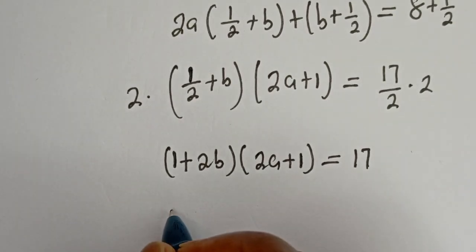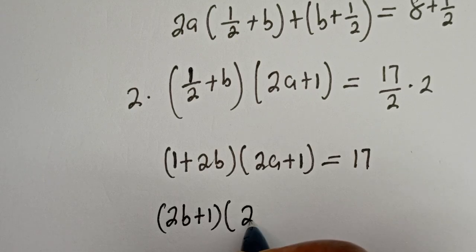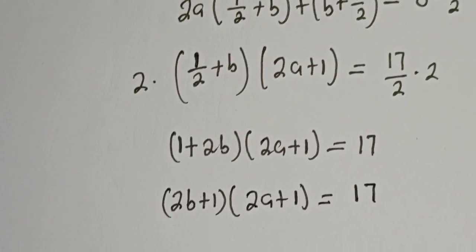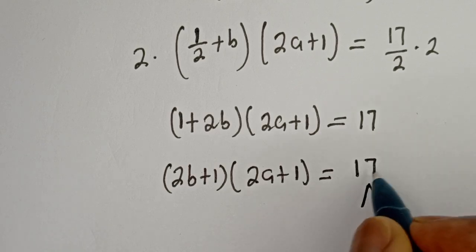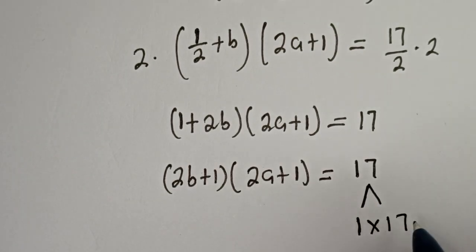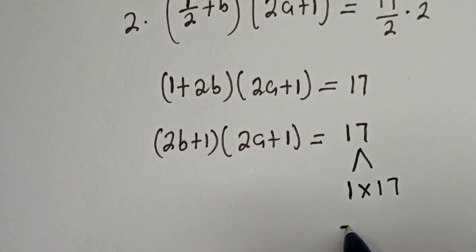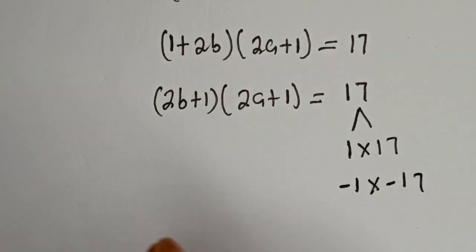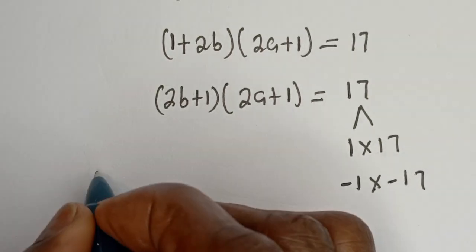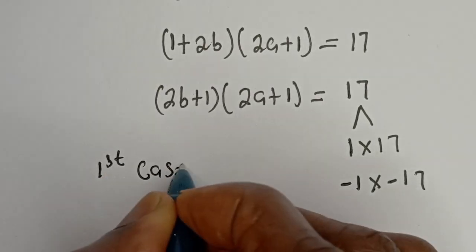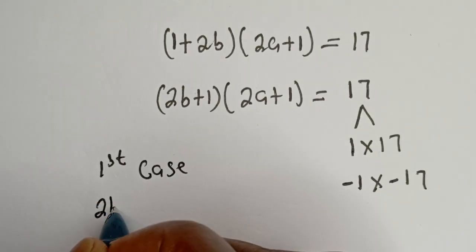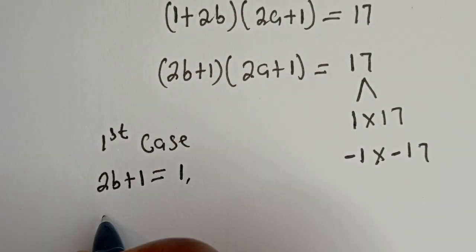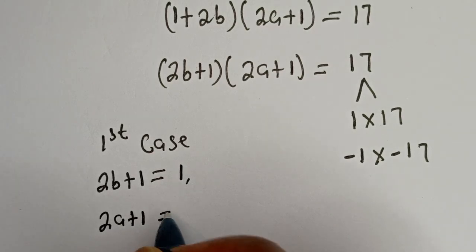This can be rearranged as 2b plus 1, bracket 2a plus 1, is equal to 17. Since we are looking for the integer solution, 17 is 1 multiplied by 17, or minus 1 multiplied by minus 17. We have 2 cases. The first case: 2b plus 1 is equal to 1, and 2a plus 1 is equal to 17.